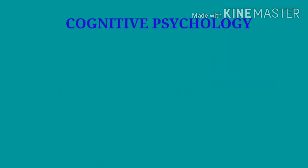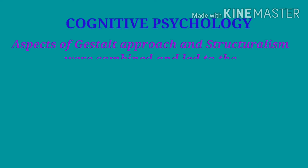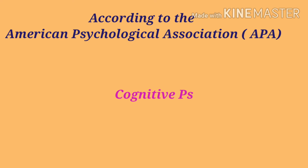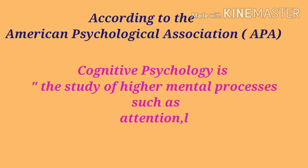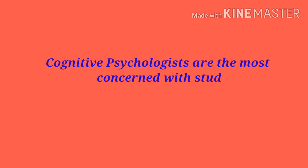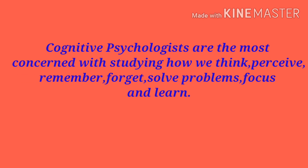The next school is cognitive psychology. Aspects of the Gestalt approach and structuralism were combined, leading to the development of cognitive psychology, which focuses on how we know about the world. According to the American Psychological Association, cognitive psychology is the study of higher mental processes such as attention, language use, memory, perception, problem solving, and thinking. The core focus of modern cognitive psychology is on studying how people acquire, process, and store information within the complex computing system known as the human brain. Whereas behaviorism focuses only on observable behaviors, cognitive psychology studies internal mental states and processes.